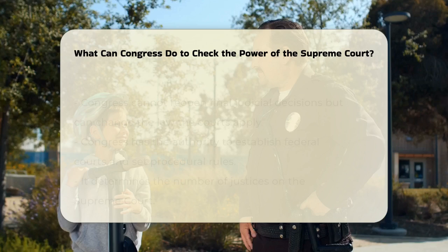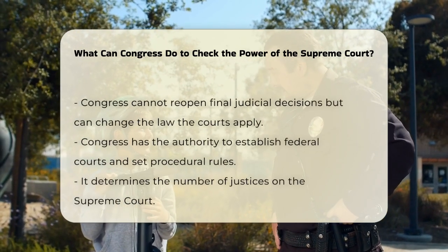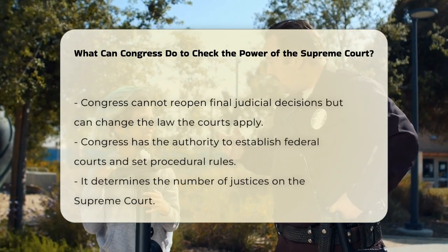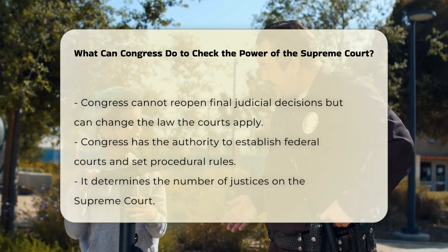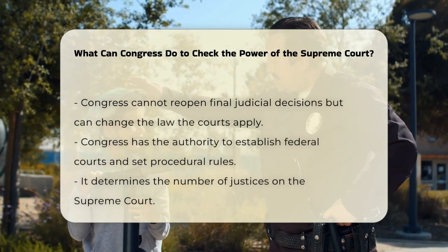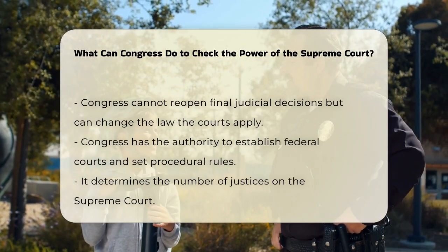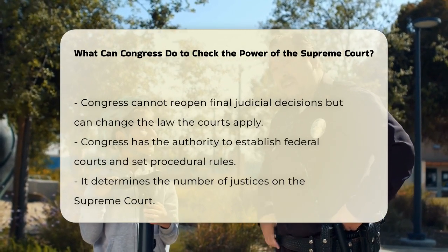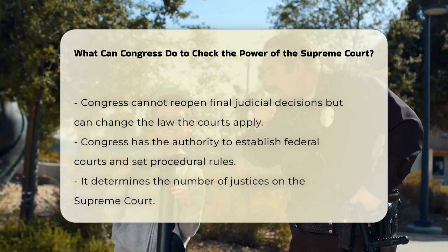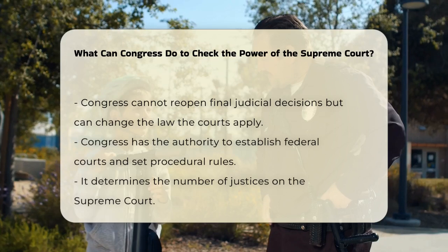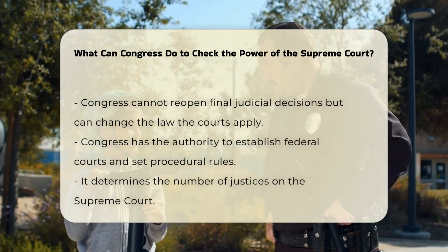Another way Congress can check the Supreme Court is by altering the impact of a court decision after it has been made. While Congress cannot direct the courts to reopen final judicial decisions, it can pass legislation that changes the substantive law the courts must apply. This can effectively override the court's decision by changing the underlying law.